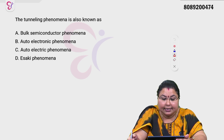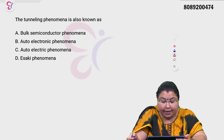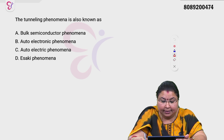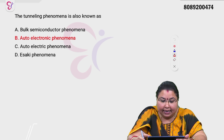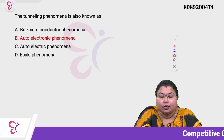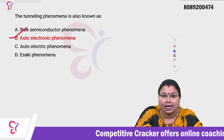The tunneling phenomenon is also known as: Option A bulk semiconductor phenomena, Option B auto electronic phenomena, Option C auto electric phenomena, Option D Esaki phenomena. The tunneling phenomenon is also known as auto electronic phenomena — Option B is the correct answer.